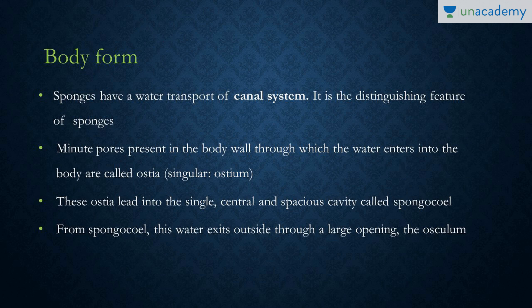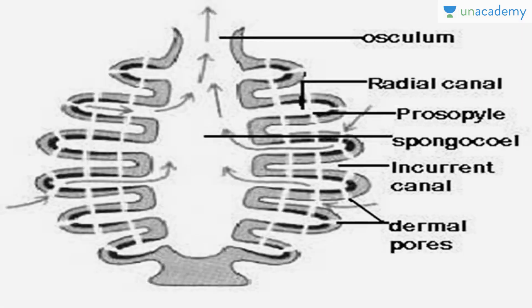One of the peculiar or characteristic features of sponges is the canal system — it's the distinguishing feature. From the diagram we can see dermal pores, or ostia — minute openings throughout the body of the sponge. From these ostia there are incurrent canals and radial canals, which lead to a large central cavity known as the spongocoel. Water is excreted via a single opening known as the osculum (plural: oscula).